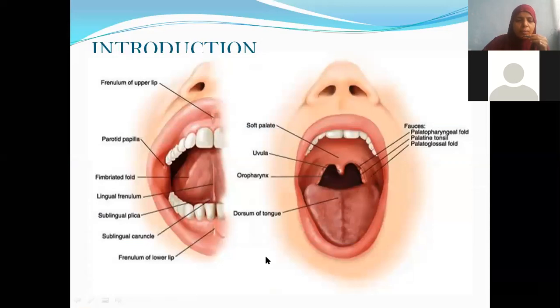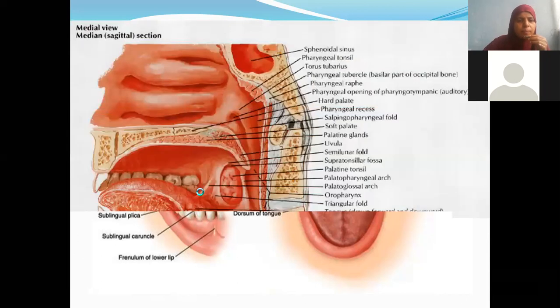So where is the tongue present? It is present inside the oral cavity. This is vestibule of the oral cavity and when you see the tongue, it has two surfaces. This is dorsum of the tongue and this is ventral aspect.